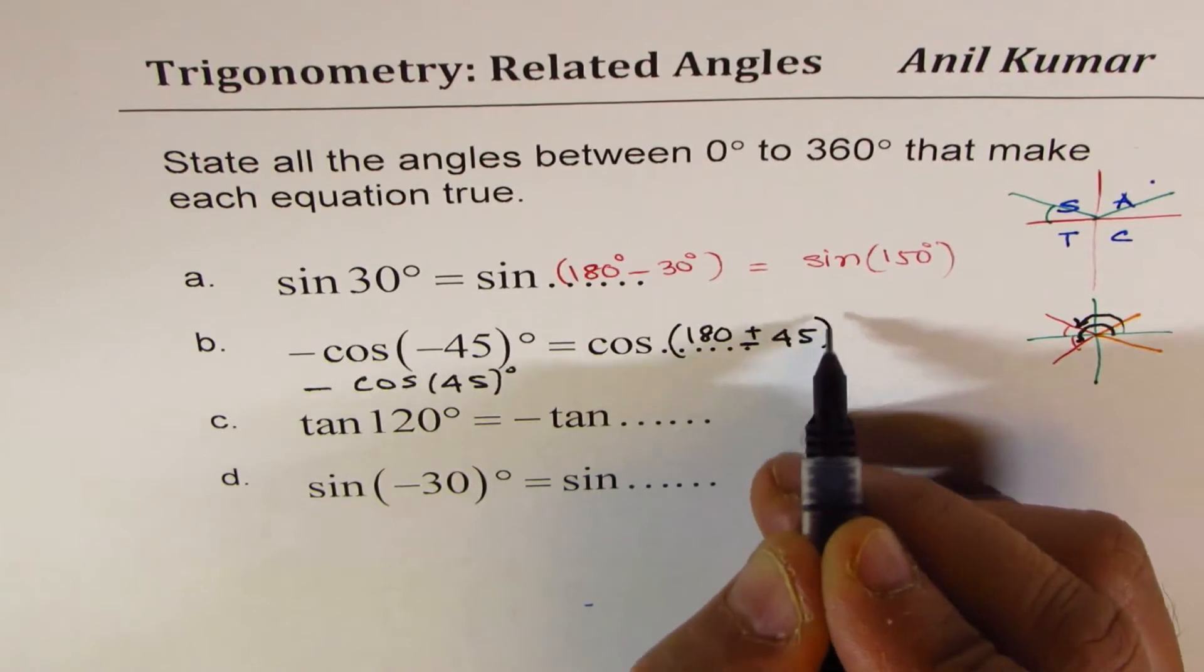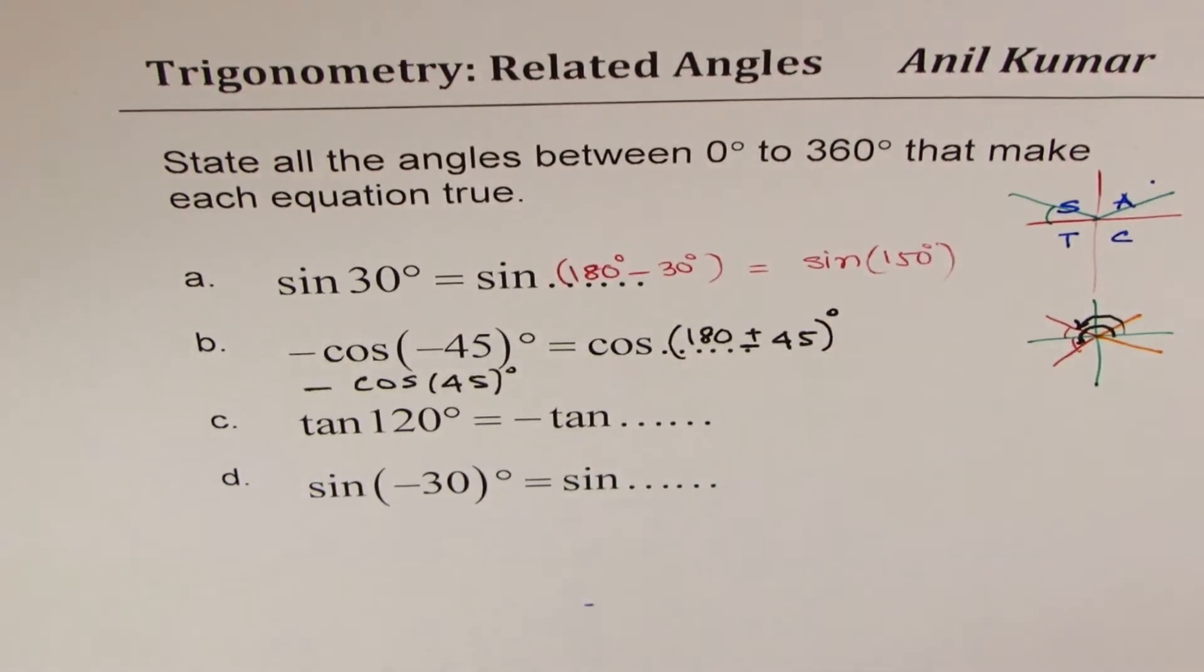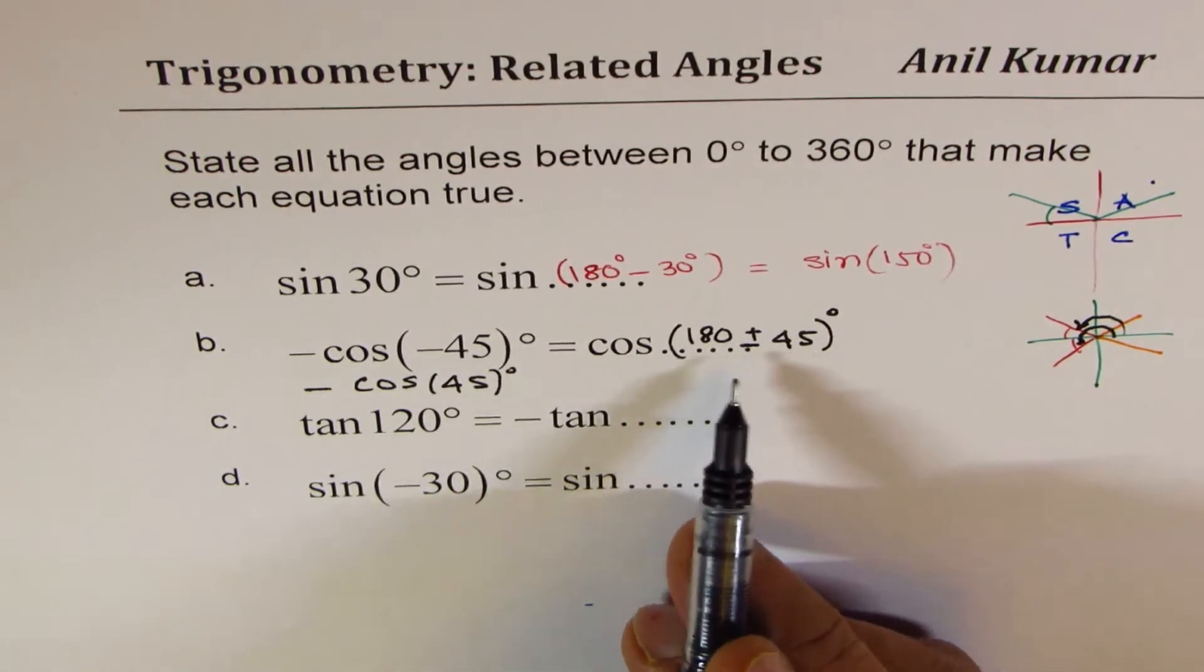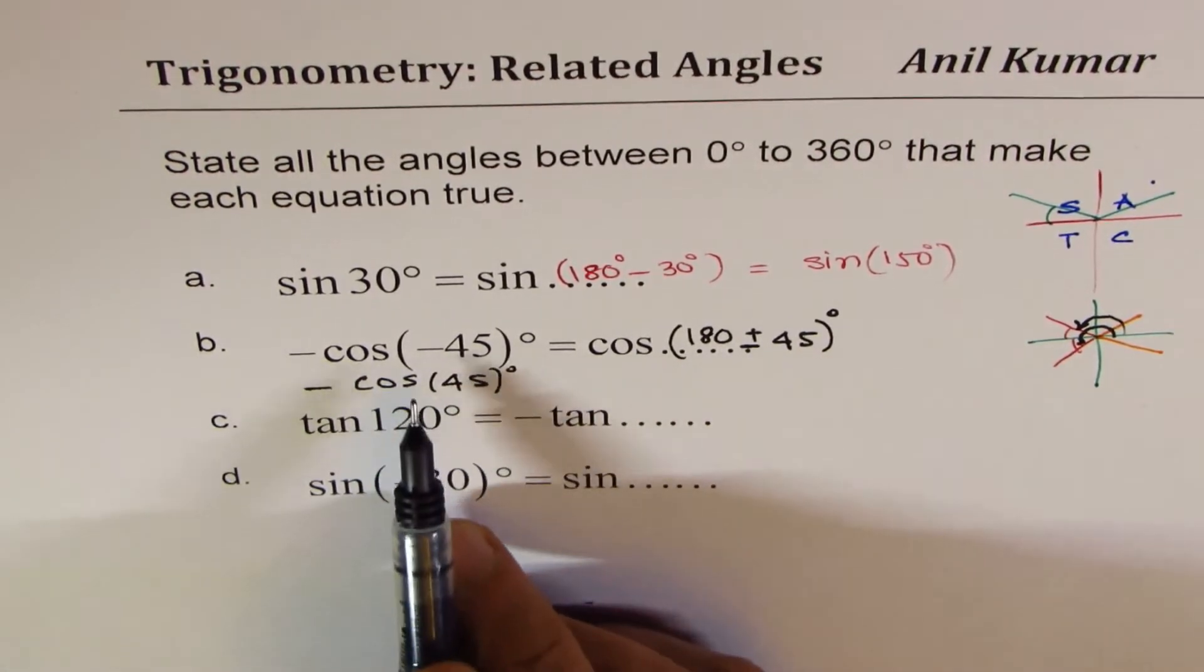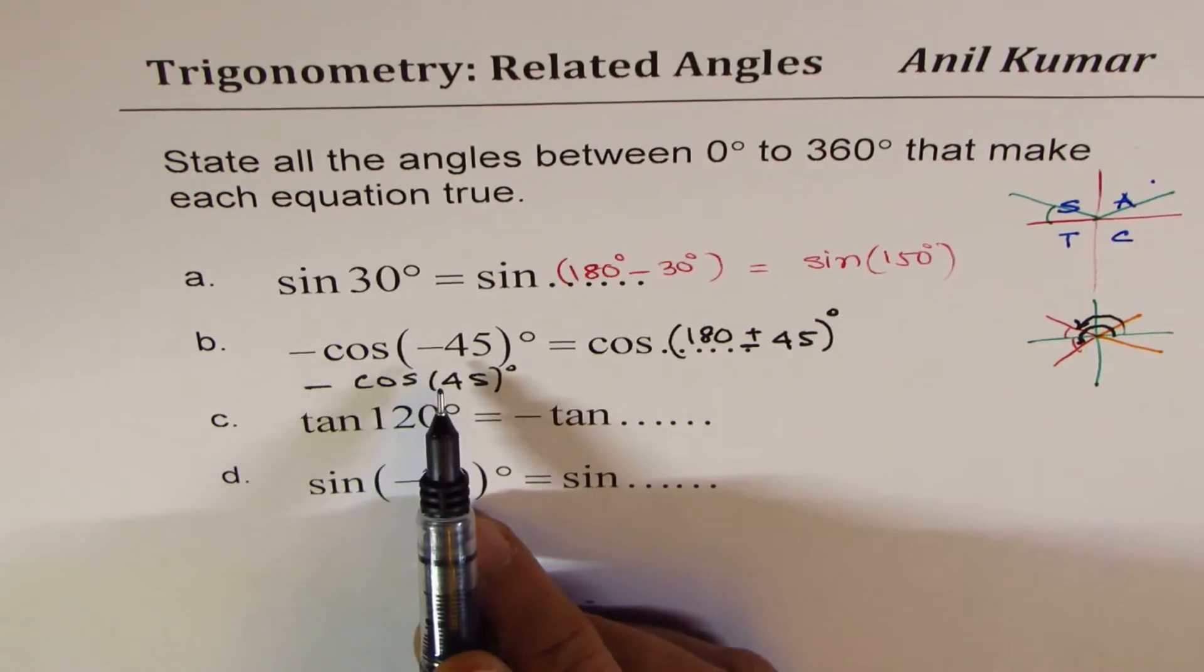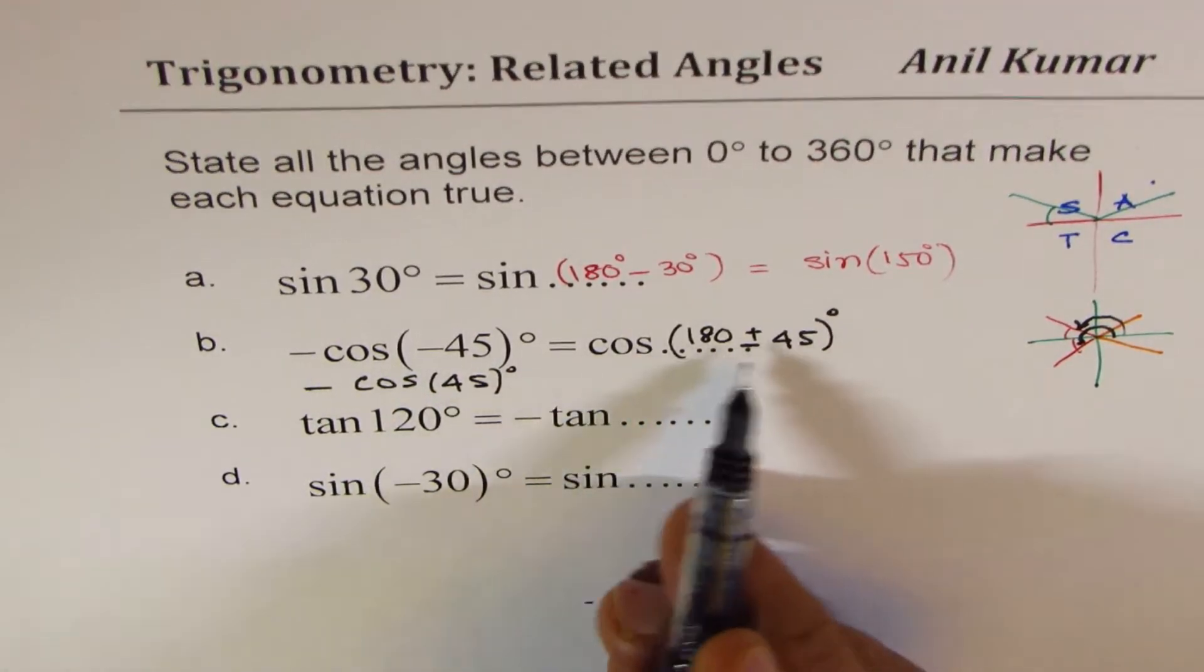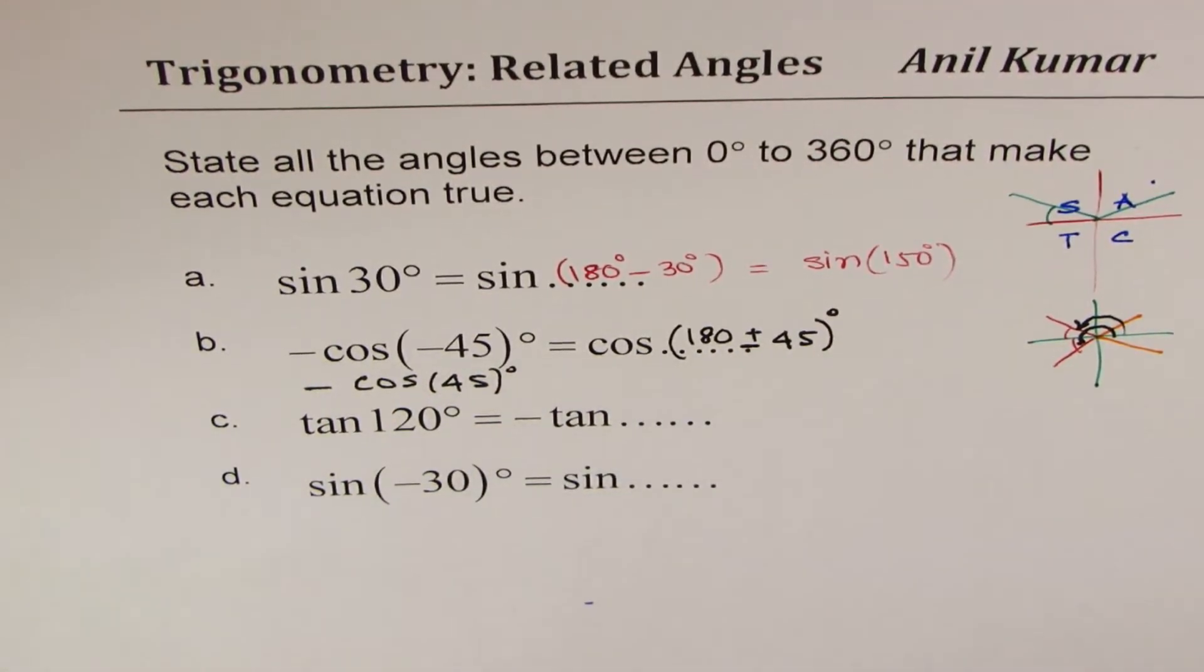In both these quadrants, cos is negative, so we'll get a negative value. So these are the two angles which will make the statement true. So that is how you have to answer the question.